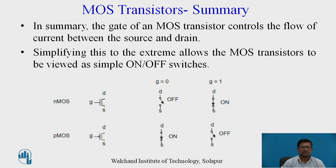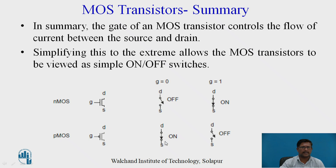In summary, the gate of a MOS transistor controls the flow of current between source and drain. Simplifying to the extreme, the MOS transistor can be viewed as a simple on/off switch. For NMOS: when gate equals 0 (logic 0), NMOS is off — open circuit; when gate equals 1, NMOS is on — short circuit. For PMOS: when gate equals 0, PMOS is on — short circuit; when gate equals 1 (logic high), PMOS is off — open circuit.